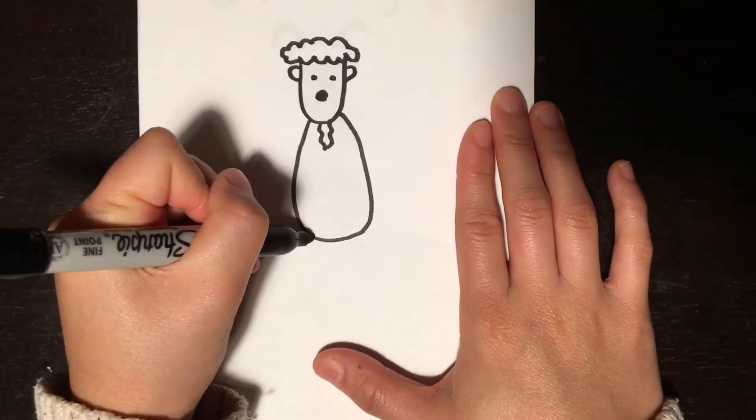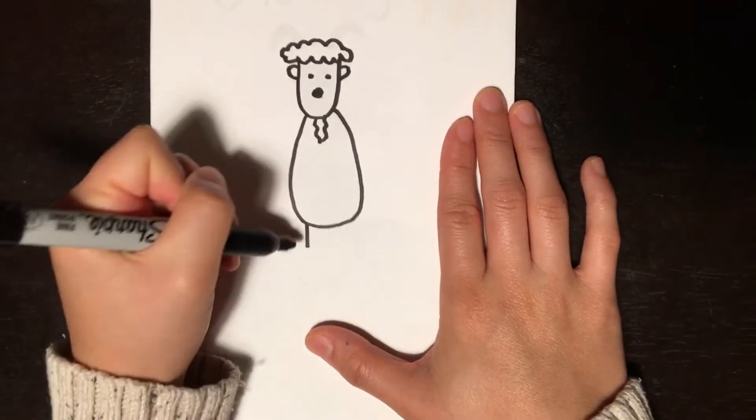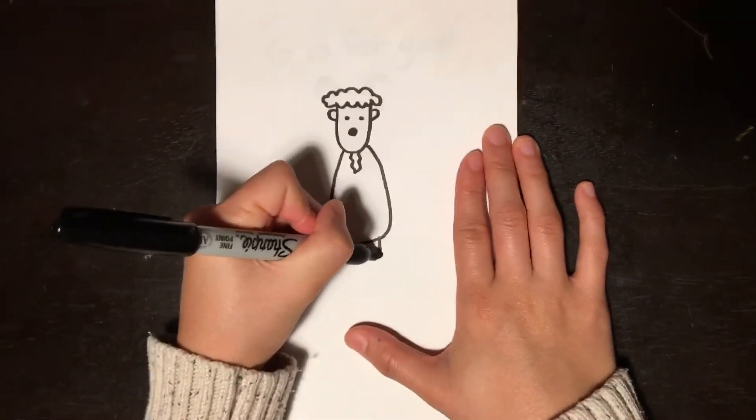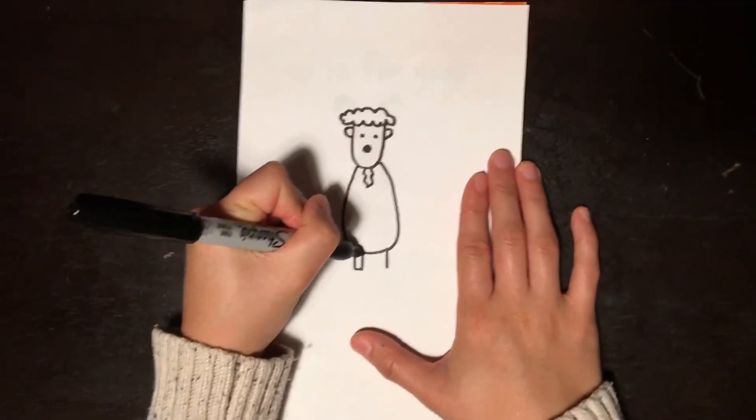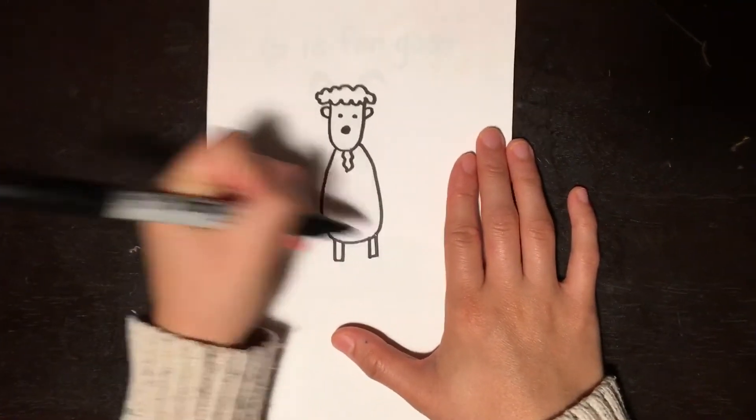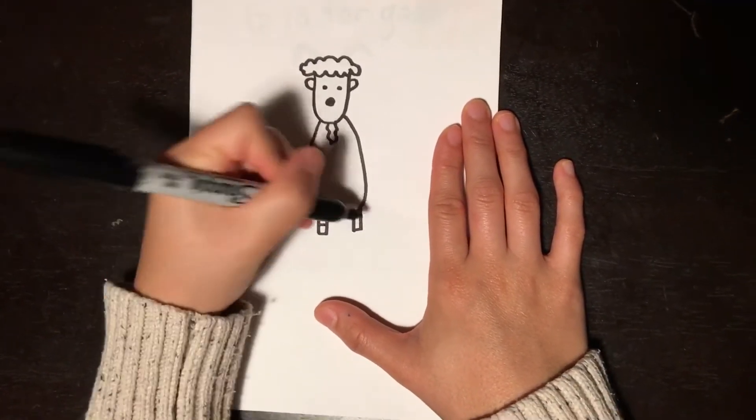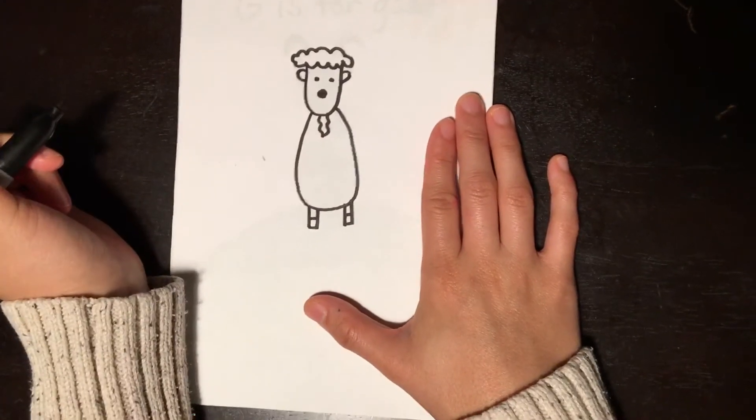And then I'm going to give it some feet. So I'm gonna just do a straight line down here. Another straight line down here. And I'm gonna do a rectangle like this. And then a straight line like this for its hooves. And that's it.